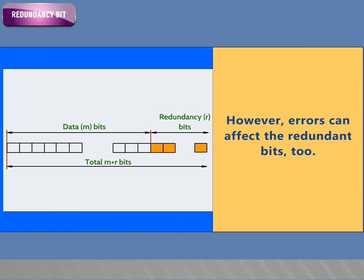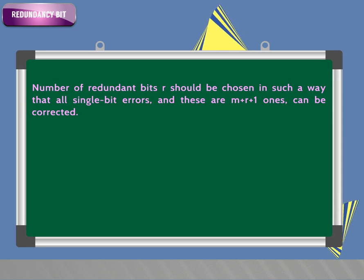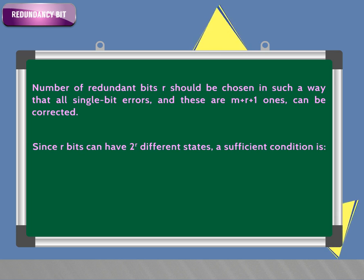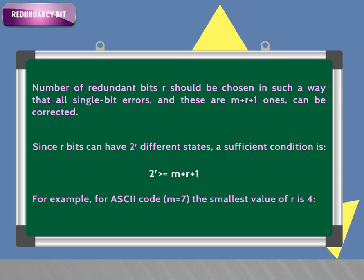However, errors can affect the redundant bits too. The number of redundant bits R should be chosen such that all single bit errors among M plus R plus 1 bits can be corrected. Since R bits can have 2^R different states, a sufficient condition is: 2^R ≥ M + R + 1. For example, for ASCII code, M equals 7, the smallest value of R is 4, since 2^4 = 16 ≥ 7 + 4 + 1 = 12.